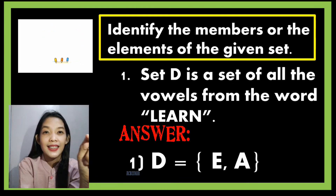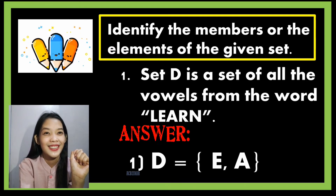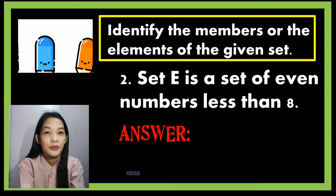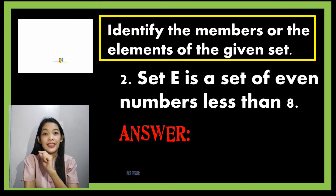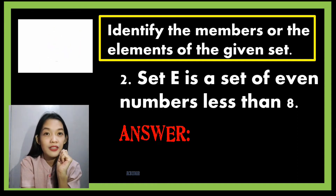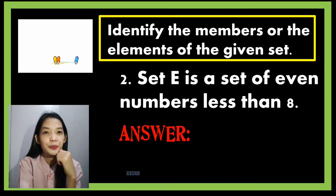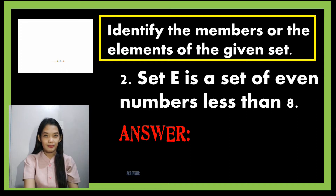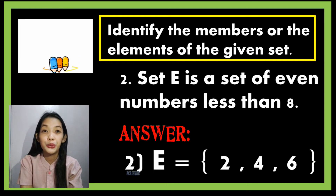Check your answers. For number two, Set E is a set of even numbers less than eight. The numbers less than eight are one through seven, but we need to identify which are also even. Remember that even numbers are numbers that are divisible by two. So the answers are: Set E has elements two, four, and six.